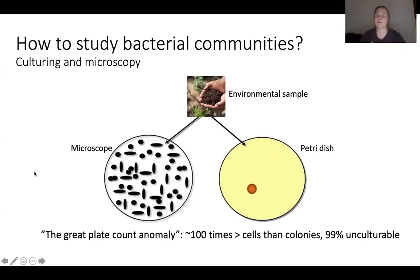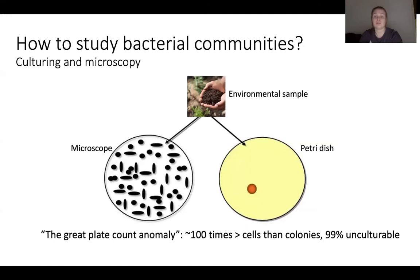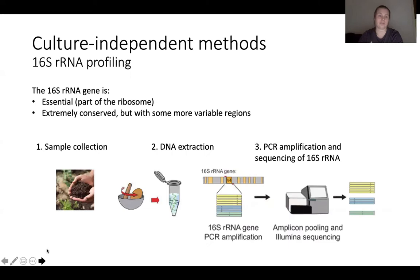How can we study bacterial communities? For a long time there were only two options: either you look at them with the microscope, or you try to isolate your bacteria and culture them in the lab. Both of these methods continue to be very important, but unfortunately most of the bacteria out there are unculturable — or more precisely, we don't know how to culture them, and it's a lot of hard work to find out. Therefore, it's been very important to come up with methods that don't involve culturing, and one of those methods is known as 16S rRNA profiling.